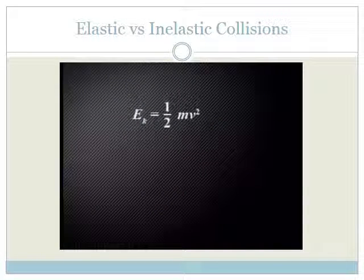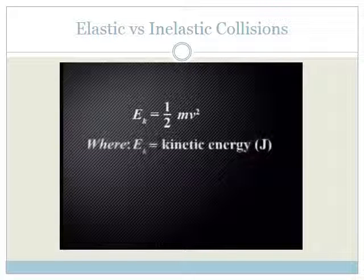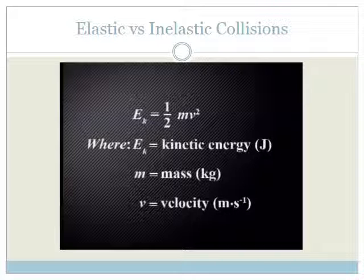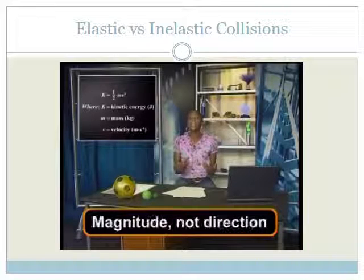To calculate kinetic energy, we use the equation: kinetic energy is equal to half times mass times velocity squared, where k is equal to kinetic energy measured in joule, m is equal to mass measured in kilograms, and v is velocity measured in meters per second. Kinetic energy is scalar, so it only has magnitude, not direction.